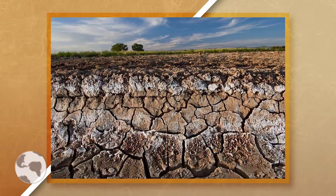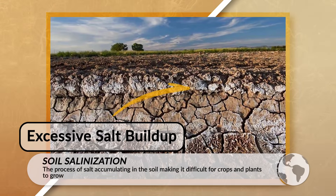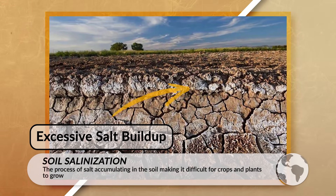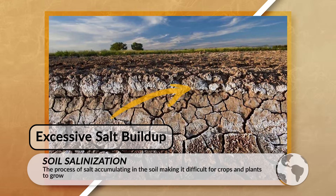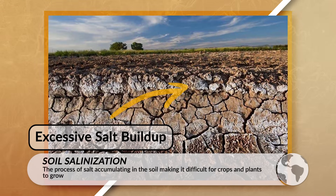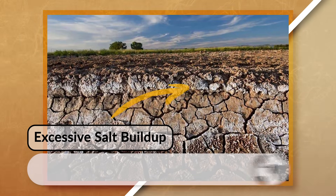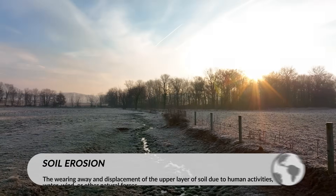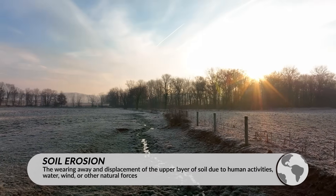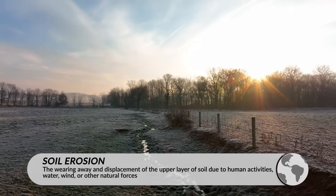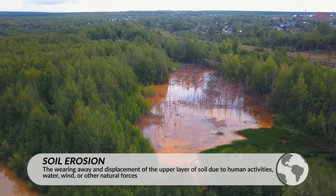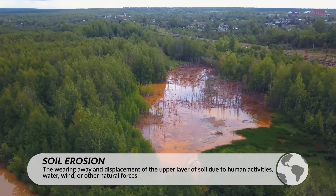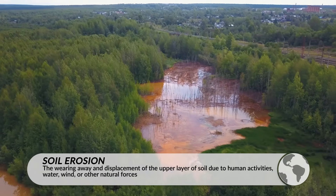Another environmental impact is soil salinization. This is when excessive amounts of salt accumulate in the soil, killing the plant roots, which makes it difficult for crops and plants to grow. This could cause more water runoff and could lead to soil erosion, all of which reduces the amount of arable land and allows for more water pollutants to impact local rivers, lakes, and oceans.